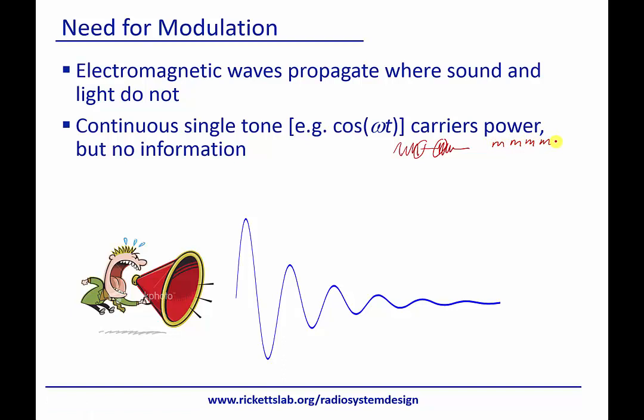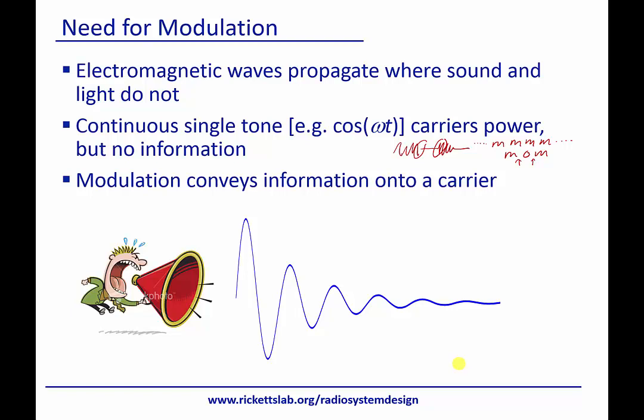If you wrote a word that was all M's for all time, it couldn't contain any information because nothing changes. But the word 'mom' conveys information through the change in letters. Similarly, a carrier by itself can't contain information — there is an exception related to single sideband requiring a separate reference, but generally we need a carrier that changes. That's why we need modulation: to convey information onto an electromagnetic wave and transmit it through the air.